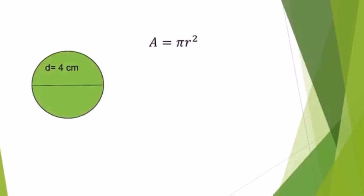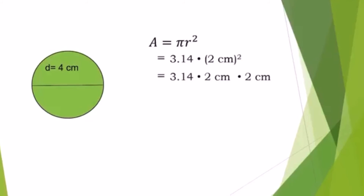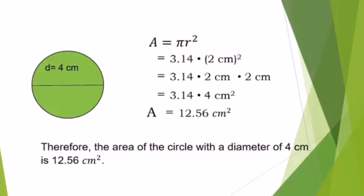Now let's find the area of the circle. Area equals pi r squared. Substituting the values of pi and radius, we have 3.14 times 2 centimeters squared, which equals 3.14 times 2 cm times 2 cm. Multiplying 2 by 2 gives 4 square centimeters. So 3.14 times 4 square centimeters equals 12.56 square centimeters. Therefore, the area of the circle with a diameter of 4 centimeters is 12.56 square centimeters.